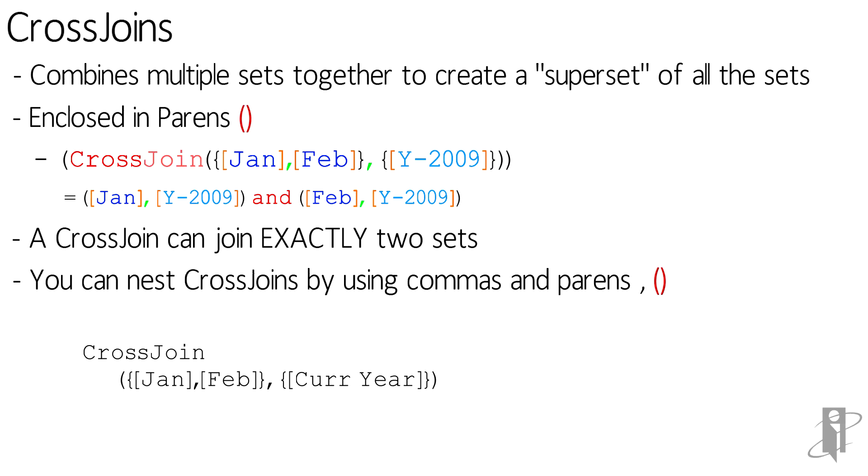For example, we have this cross-join, the original cross-join, which is January and February of current year. We can add around it the cross-join open paren of the result set of the first cross-join and the measures of units and returns.